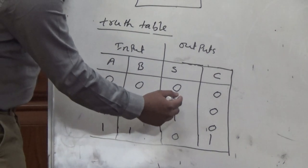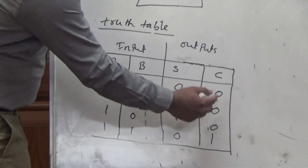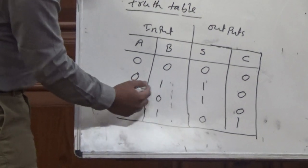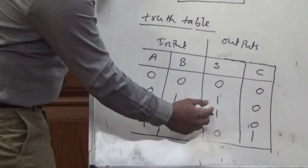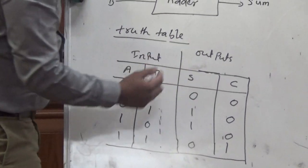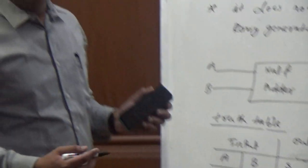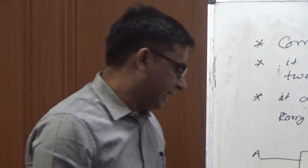0 plus 1 is 1 but no carry is generated, therefore the carry is 0. When A is 1 and B is 1, 1 plus 1 equals sum is 0 and the carry is 1.